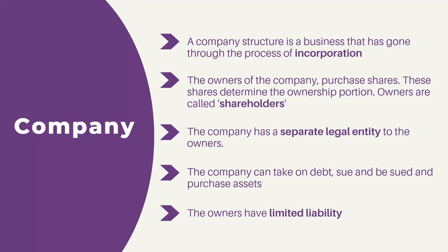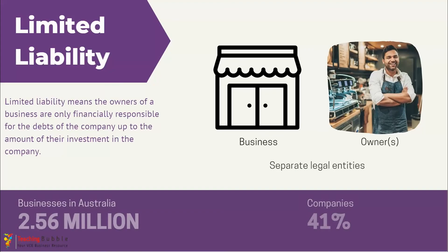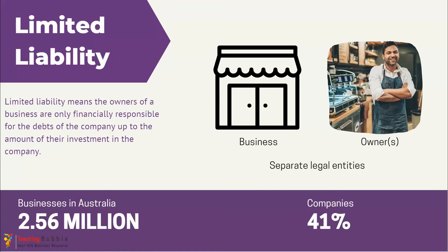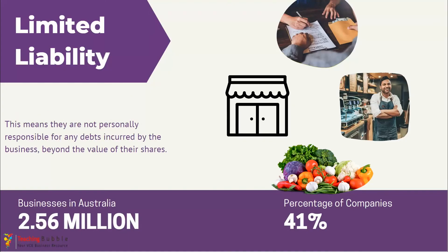Let's take a look at an example of limited liability using our cafe example. The owner is represented on the right and the cafe — now a company — is on the left. In the previous video they were the same legal entity, but now because of incorporation they are separate legal entities. The owner has limited liability, meaning they are only financially responsible for the debts of the company up to the amount of their investment. Say the company has taken on a bank loan and owes its suppliers money on 30 or 60 day accounts. If things go bad and the company cannot pay off its debts, the owner is not personally responsible for those debts.